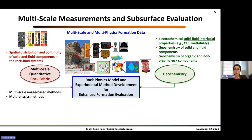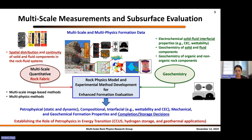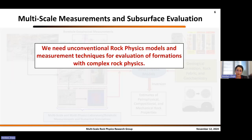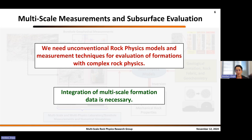Unique characteristics of the research we do is to integrate geochemistry and multi-scale quantitative rock fabric in formation evaluation and rock physics model development. The purpose is to enhance petrophysical, compositional, interfacial, mechanical, and geochemical formation properties for enhanced completion and storage decisions. We also have efforts on establishing the role of petrophysics in energy transition, including projects related to CCUS, hydrogen storage, and geothermal applications.